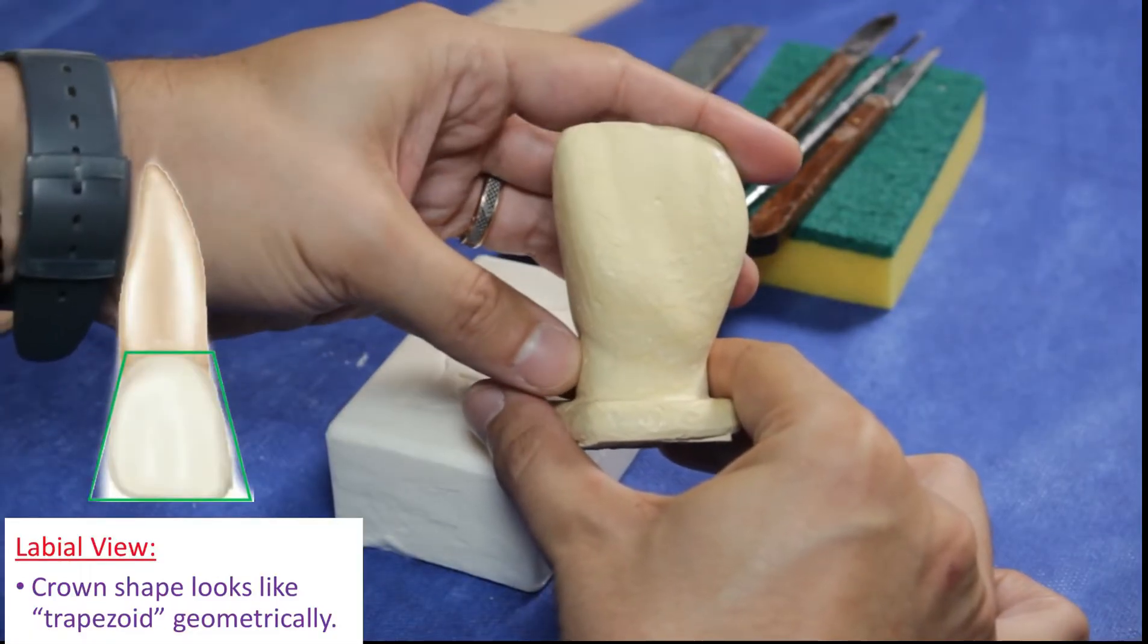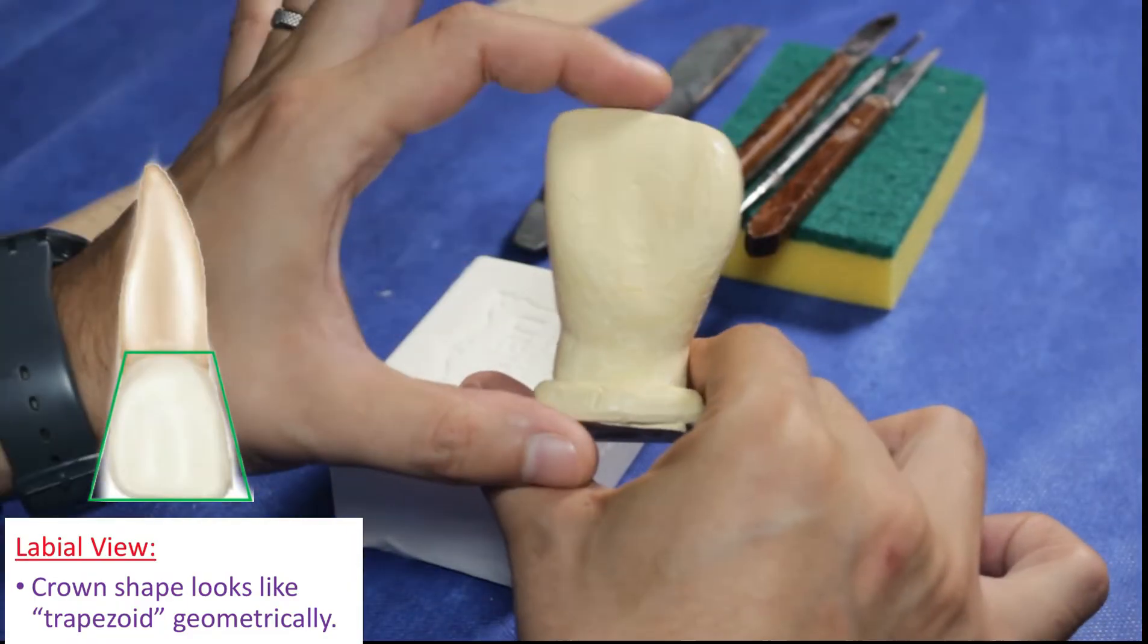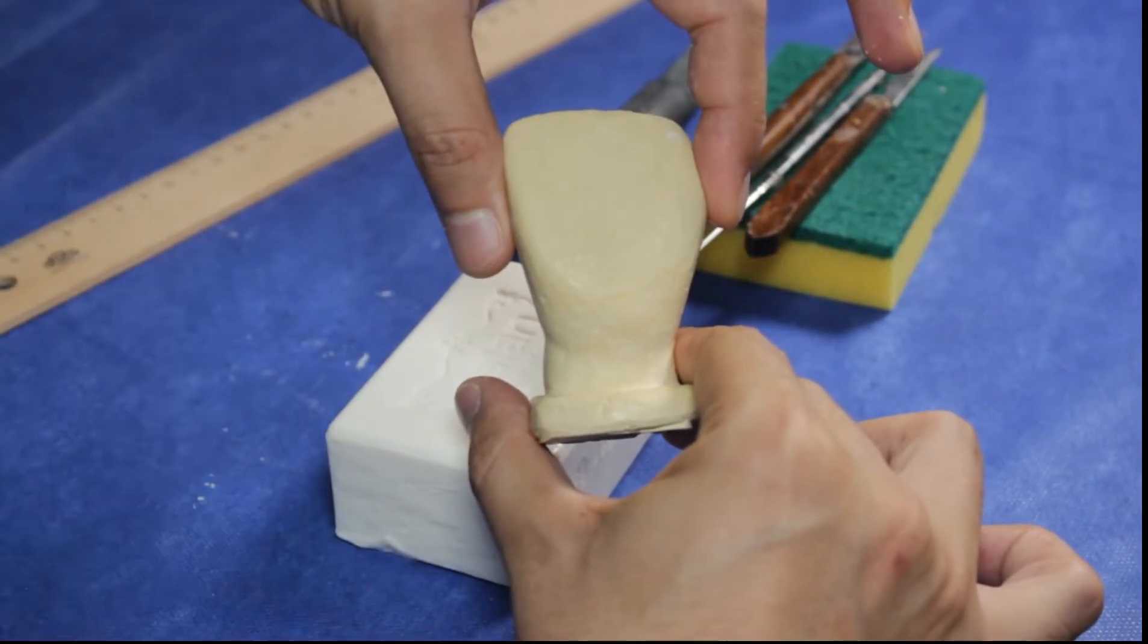When we look from labial, the general shape of the central tooth's crown is trapezoidal. It narrows from incisal towards the cervical.